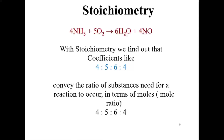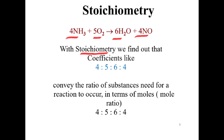With stoichiometry, we find that coefficients like four, five, and six convey the ratio of substances needed for a reaction.